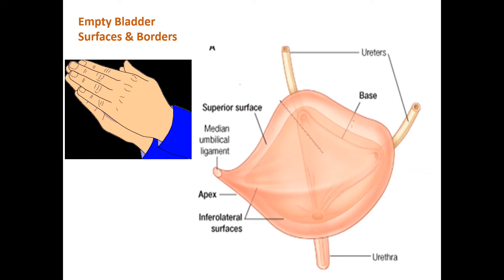Depending upon the content of the urinary bladder, its surfaces and borders differ. When the bladder is empty, it is tetrahedral in shape. Since there is no gross specimen to show, let's use a hand analogy: fold your hands as if praying, then position them at right angles to your chest so the fingertips face forward and the thumbs face superiorly. This position represents an empty urinary bladder.